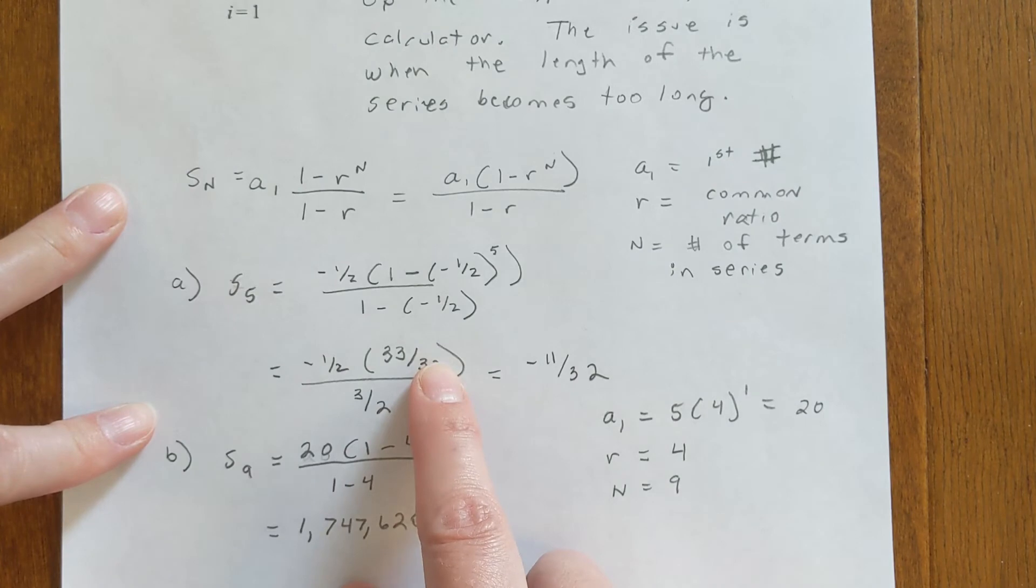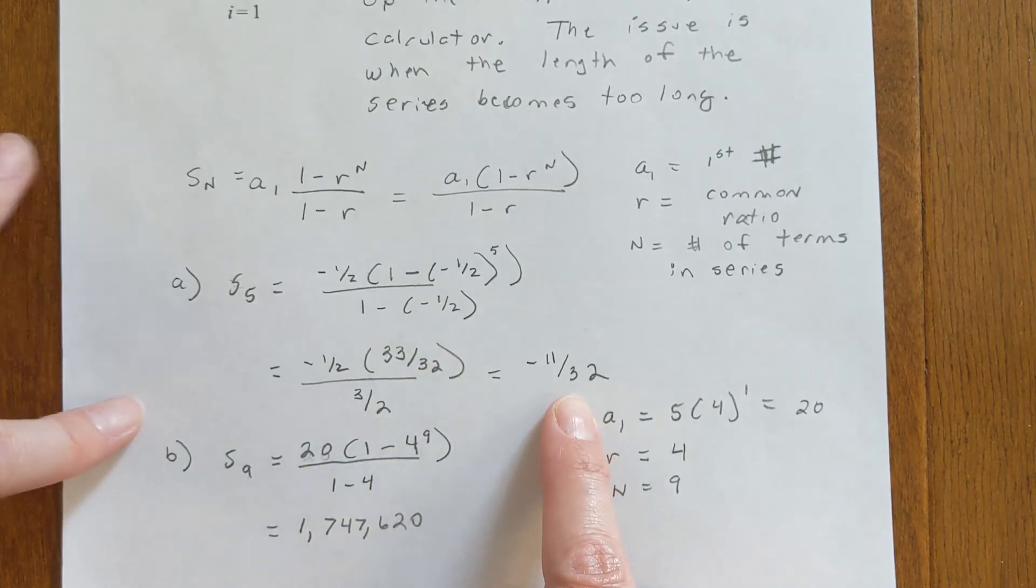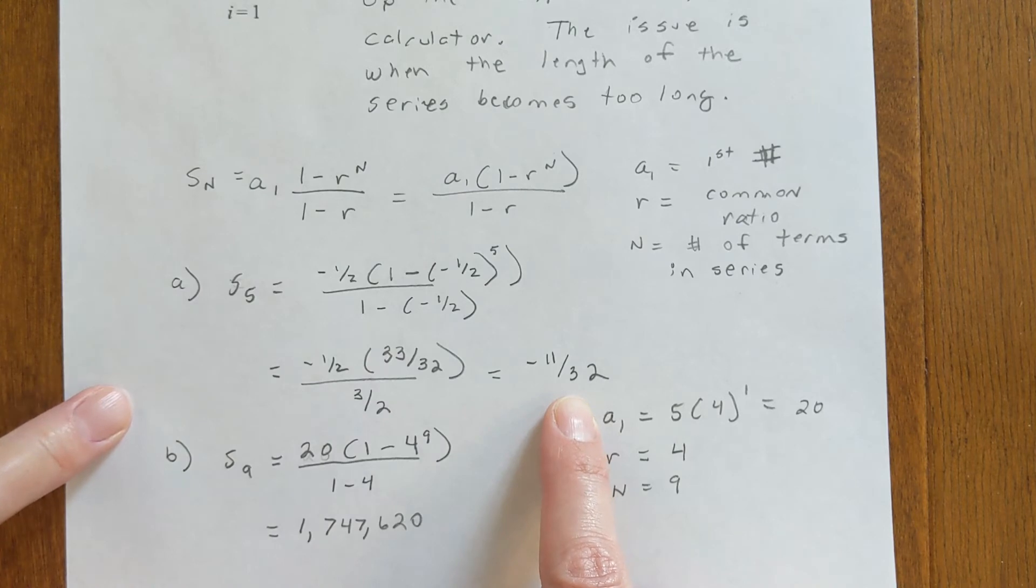Then do the math on the numerator, divide by the denominator, and you get negative 11/32 for the sum of the first five terms in that sequence.